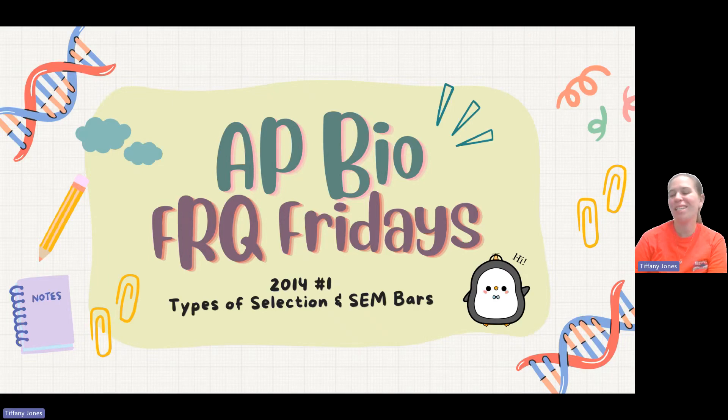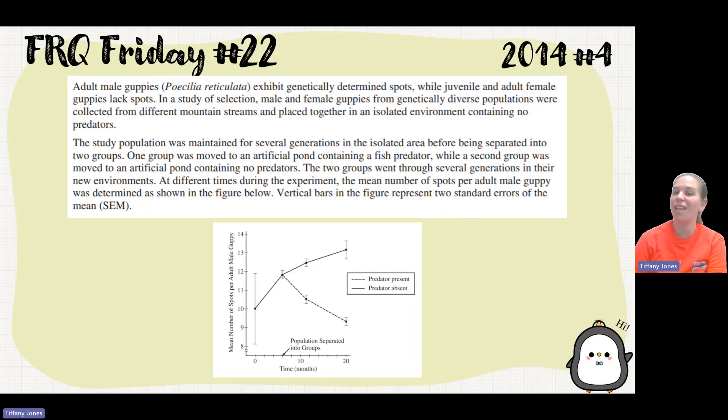What's up? If you're playing with CW 2014 number one, type selection and SEMs. Adult male guppies exhibit genetically determined spots, while juvenile and adult female guppies lack spots. In a study of selection, male and female guppies from genetically diverse populations were collected from different mountain streams and placed together in an isolated environment containing no predators.